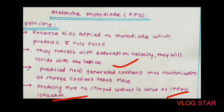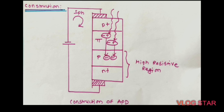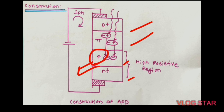The construction of the reach-through avalanche photodiode is as shown in the figure. If silicon material is used, an efficiency of about 90% can be obtained. It has a p+, π, p, and n+ configuration. The π layer has high resistivity, so most of the reverse bias is applied across the p and n+ region. When the applied reverse bias is increased, the width of the depletion region also increases.